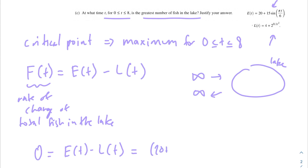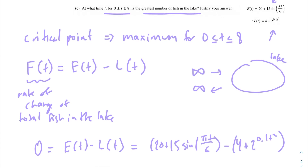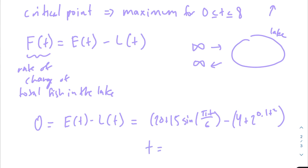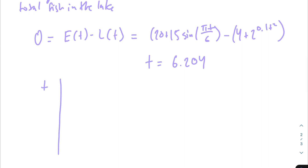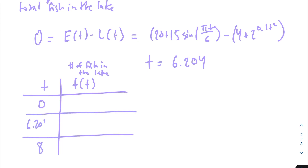Setting e(t) − l(t) equal to 0: that's 20 + 15 sin(πt/6) − (4 + 2^(0.1t²)) = 0. Plugging that into our calculator, we get t = 6.204 hours as our one critical point. For the candidates test, we evaluate F(t) — the number of fish in the lake — defined as the integral from 0 to t of (e(t) − l(t)) dt. This gives us the number of fish remaining in the lake.